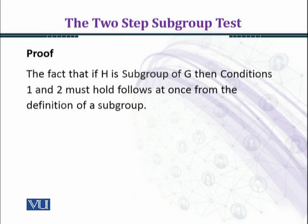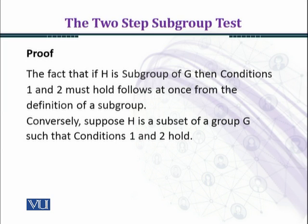The fact that if H is a subgroup of G then conditions one and two must hold follows at once from the definition of a subgroup. When H is a subgroup of G, condition one gives us the closure property holding in H, and condition two gives us the existence of inverses in H. Now we prove the converse.